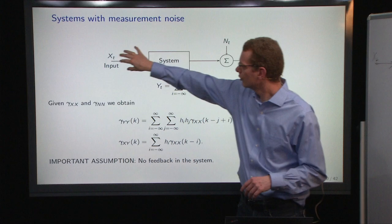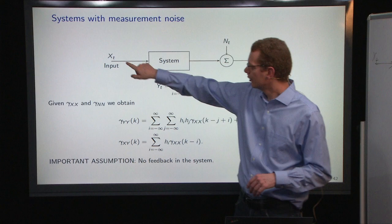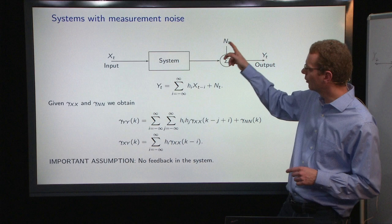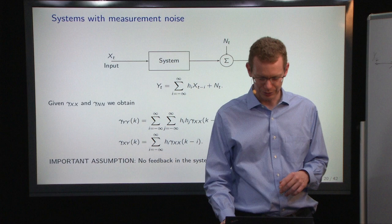Assuming that these two are independent, and if you look at just the cross-covariance between x and y, then the noise here doesn't matter because of the independence. So that is the same as saying there's no feedback from n to x or from y to x, because then they will no longer be independent.